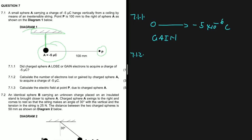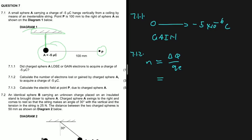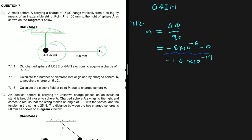Question 7.1.2 asks us to calculate the number of electrons gained or lost by sphere A to acquire a charge of minus five microcoulombs. The number of electrons gained or lost equals the change in charge of the sphere divided by the charge of an electron. The change in charge is the final charge, minus five times 10 to the minus six, minus the initial charge of zero, divided by the charge of an electron, which is minus 1.6 times 10 to the minus 19. The answer is 3.125 times 10 to the 13 electrons.